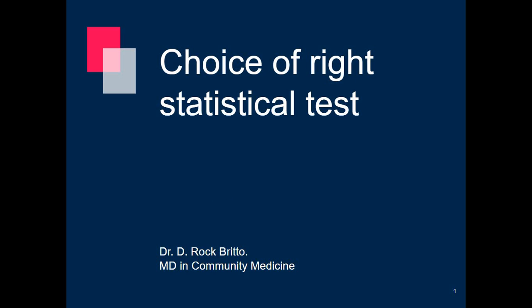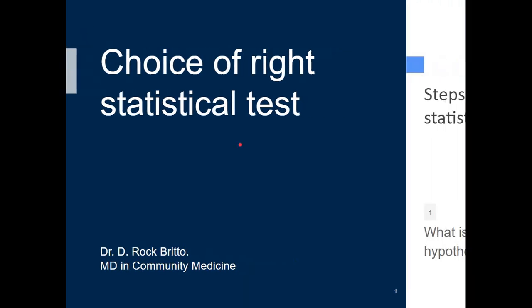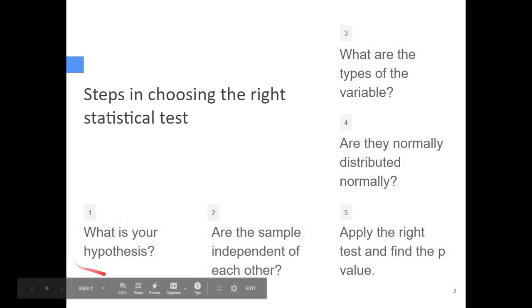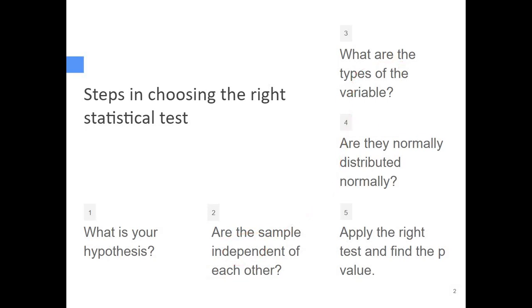Hello everybody. In this video we are going to see about the choice of the right statistical test. Here are the five steps in choosing the right statistical test: number one, what is your hypothesis; number two, are the samples independent of each other; number three, what are the types of variable; number four, are they normally distributed; number five, apply the right statistical test and find the p-value.